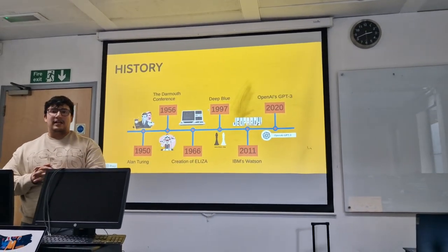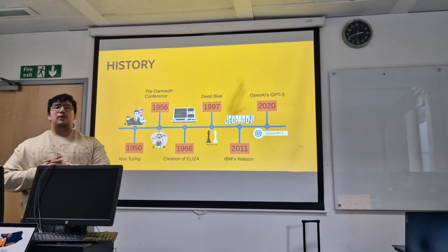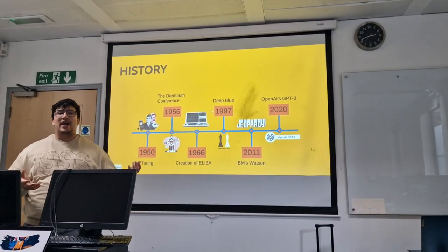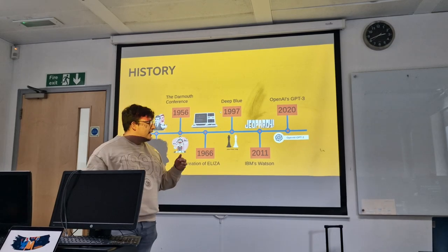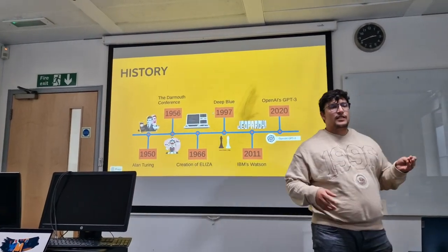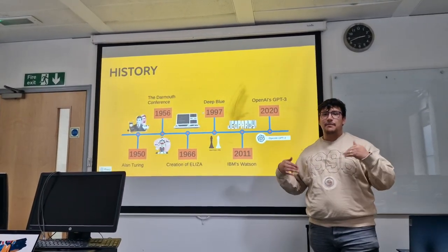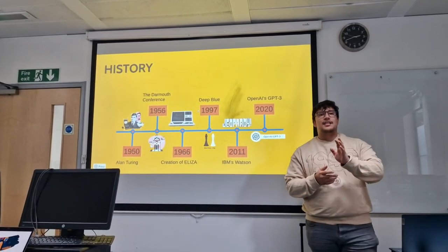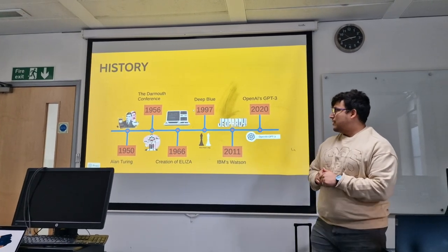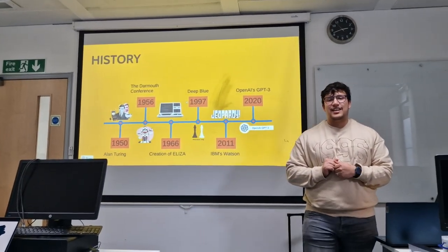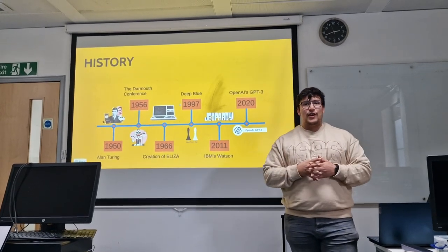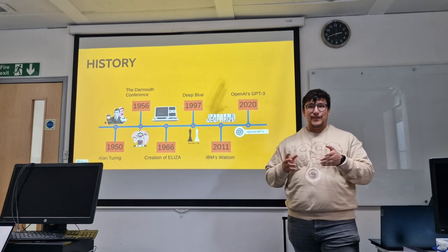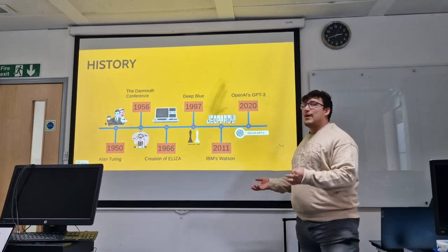In 1966, the creation of ELIZA, which was a chatbot that you could run on your computer. It was quite archaic at that time, but you could answer simple questions with some data that was already input into the code. In 1997, the Deep Blue program was able to defeat the chess champion — it won seven times in a row over seven years, and it defeated him quite easily.